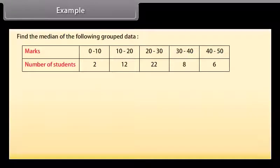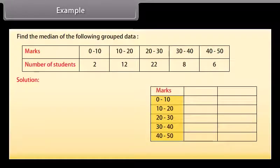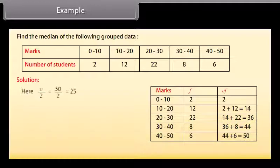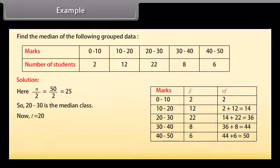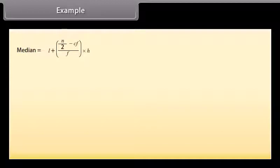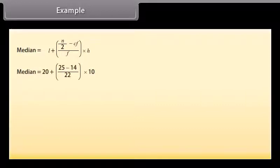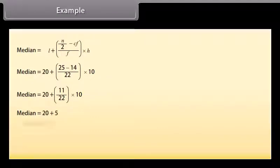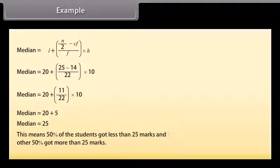Find the median of the following grouped data. Solution: The first column has the marks, the second has the frequency, and the third has the cumulative frequency. n/2 equals 50/2 equals 25, so the median class is 20 to 30. L equals 20, h equals 10, Cf equals 14, f equals 22. Median equals 20 plus [(25−14) divided by 22] multiplied by 10 equals 20 plus (11/22)×10 equals 20 plus 5 equals 25. This means 50% of students got less than 25 marks and 50% got more.